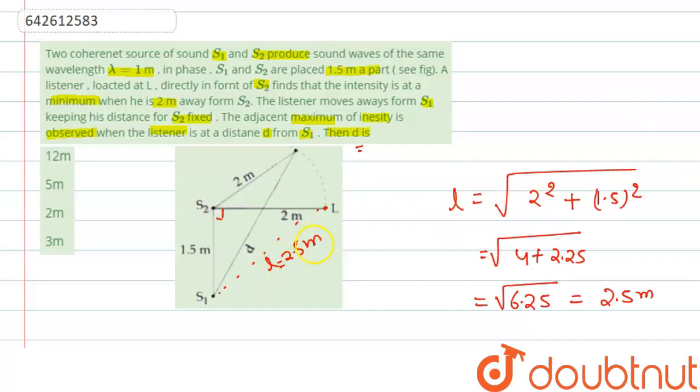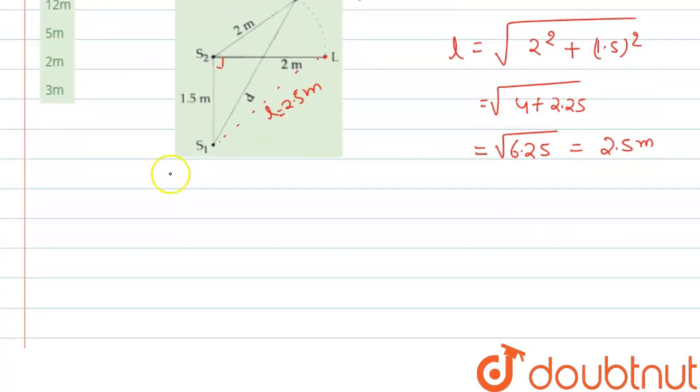Now, in the first case, the path difference is S1L minus S2L, which equals 2.5, the distance we calculated, minus 2, so this will be